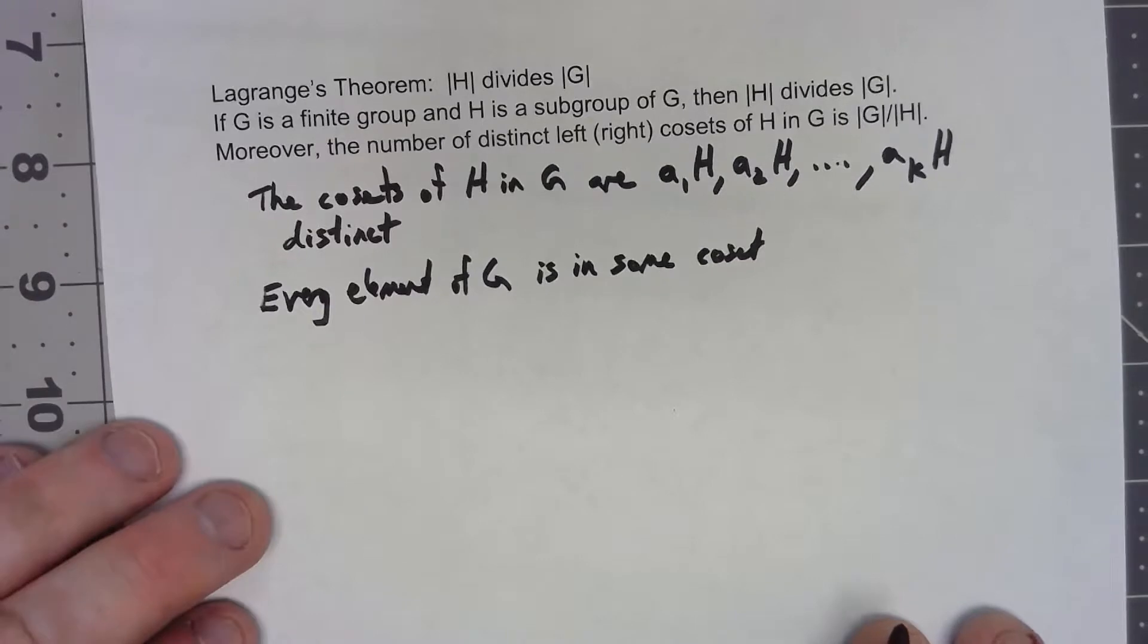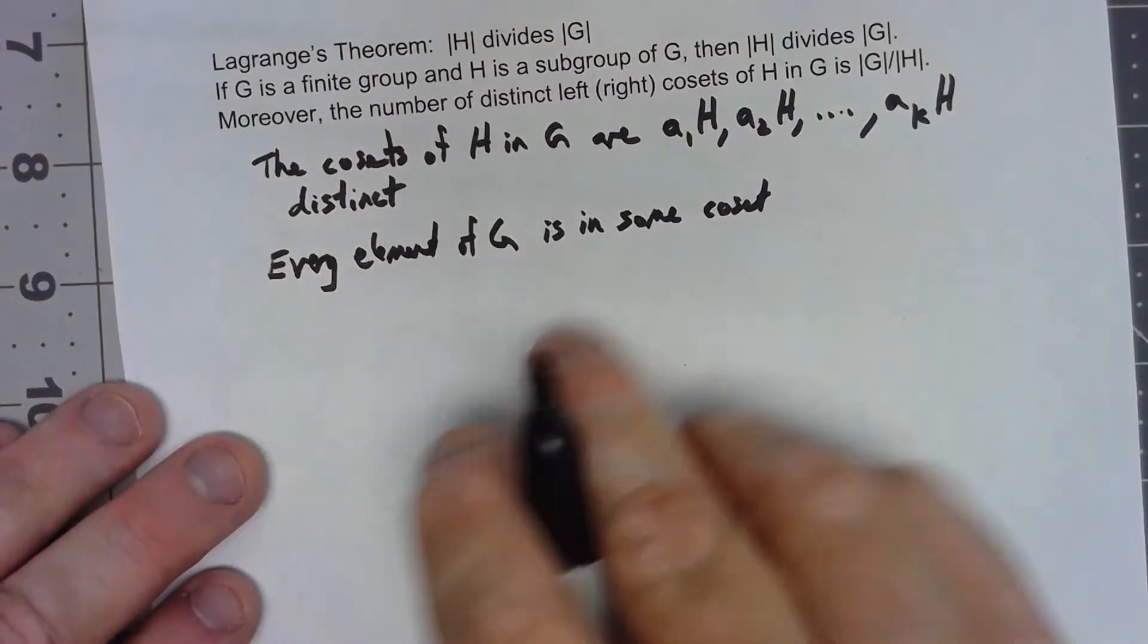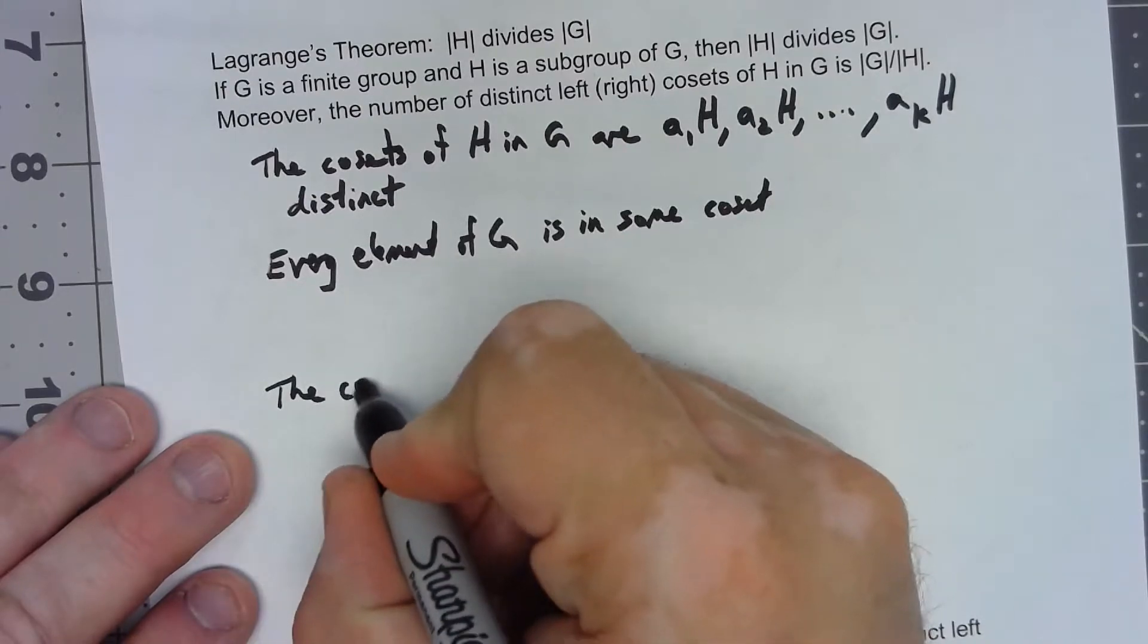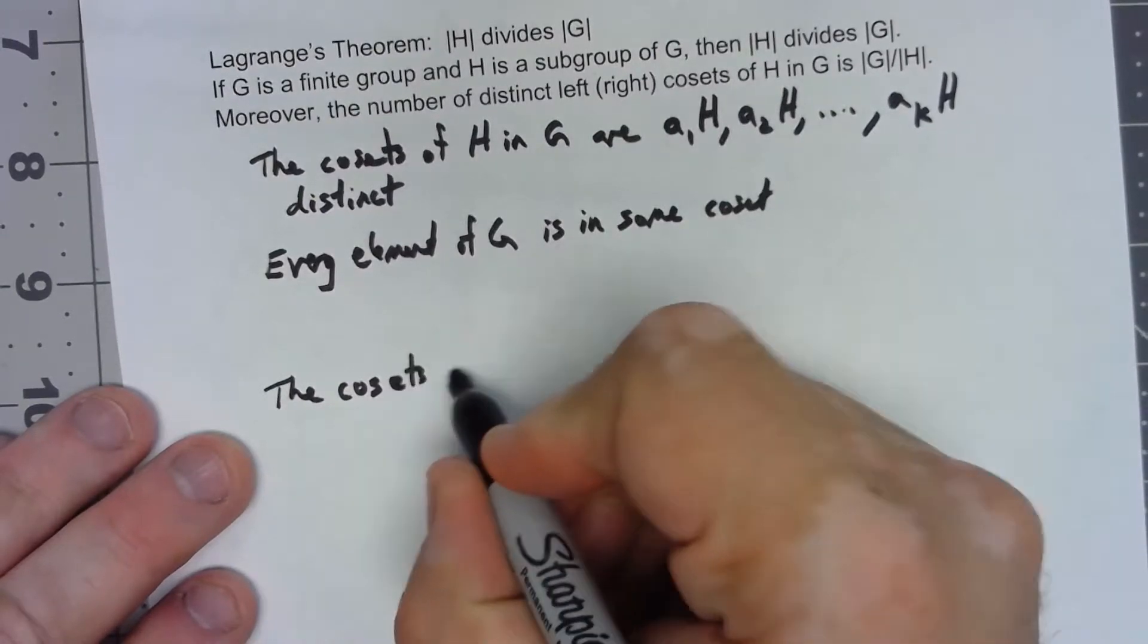And the other thing we want to show is that those cosets are disjoint.